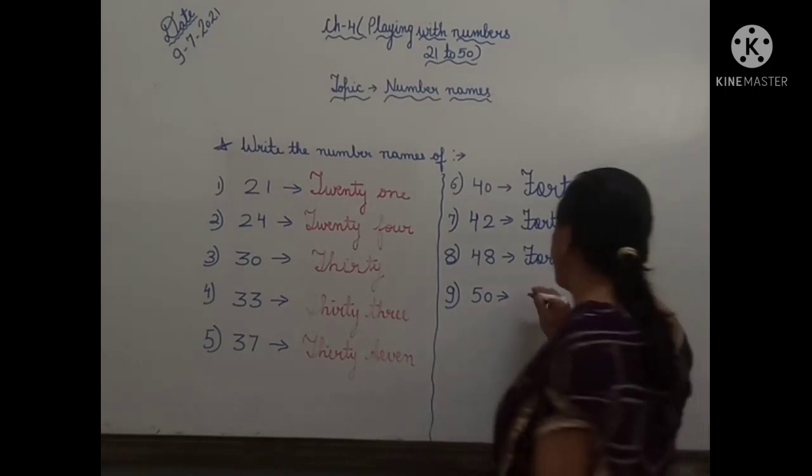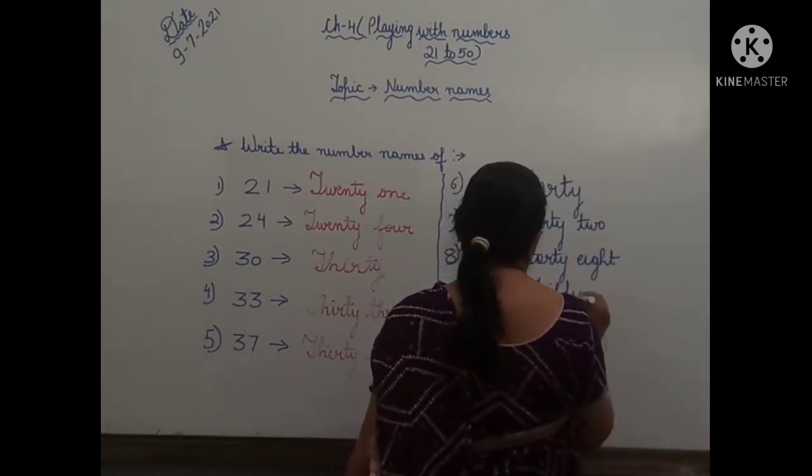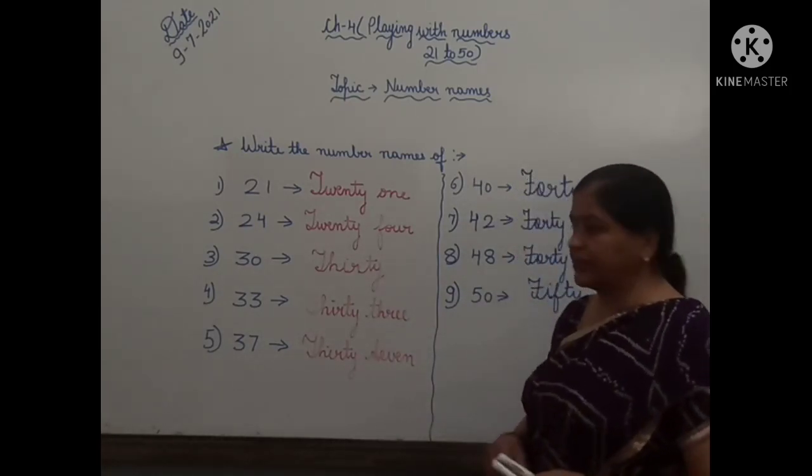Last number, 50. Spelling is F-I-F-T-Y, 50. Children, you have to learn all these spellings. Okay.